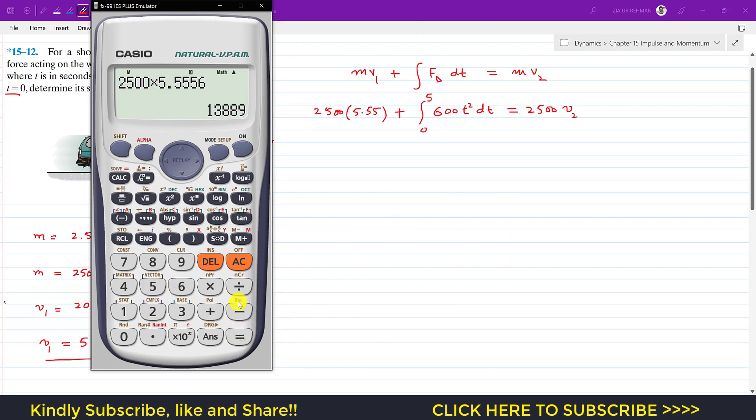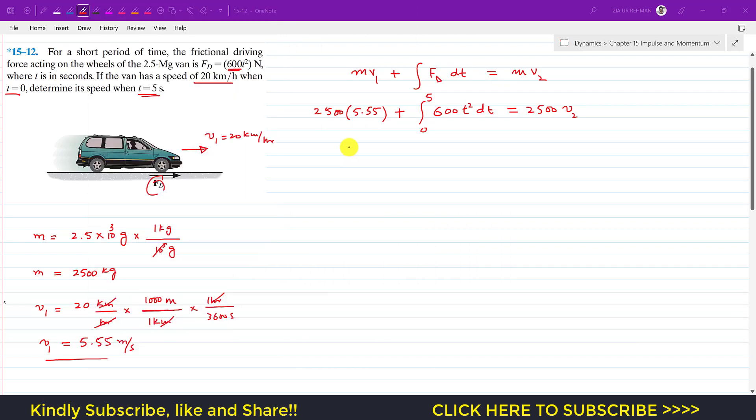So this is 2500 multiplied by 5.556, which gives us 13,889. Plus the integration of this will be 600t³ divided by 3, from 0 to 5.